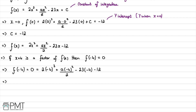Putting these values into the calculator: 0 = -128 + 8a + 80. Rearranging, we leave 8a on one side: -128 + 80 = -48, so 8a = 48. Wait — rearranging correctly gives 8a = 48, so a = -48/8, which is negative 6.